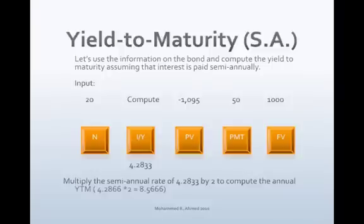The semi-annual yield is 0.042833, or approximately 4.2833%. Convert the semi-annual rate to the annual rate by multiplying by 2. The annual rate is 8.566%.